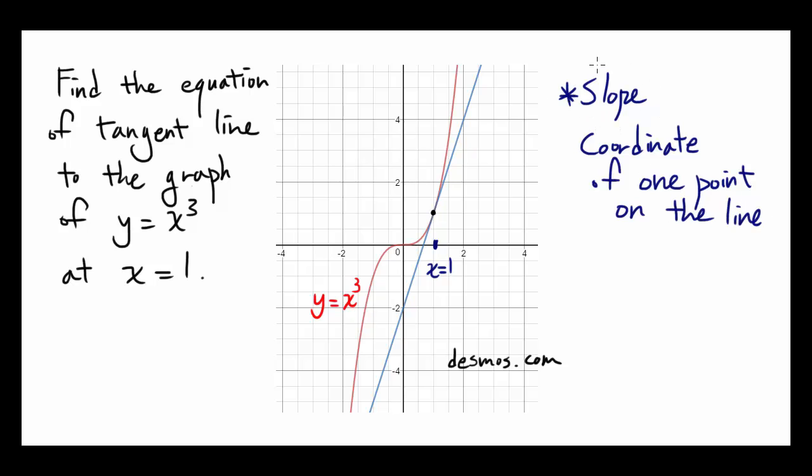First of all, the slope. The slope of y equals x cubed is going to be the derivative of the function, or dy dx, or y prime. You bring 3 down and you're going to do 3 minus 1, or 2, so it's going to be 3x squared.